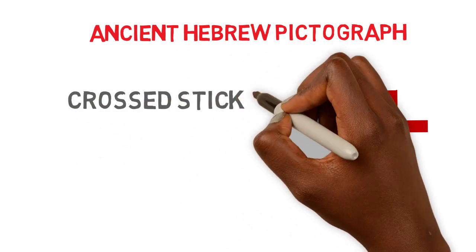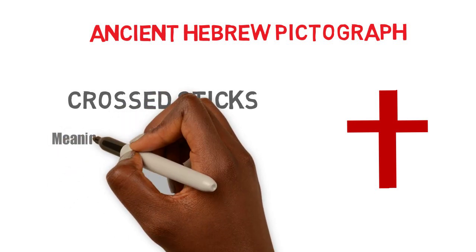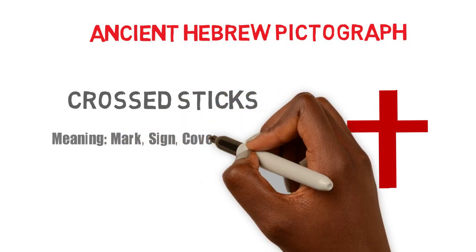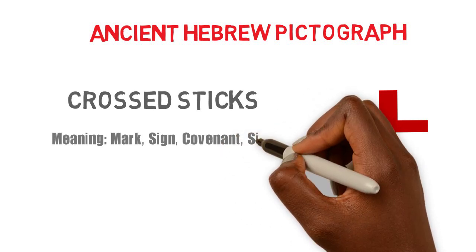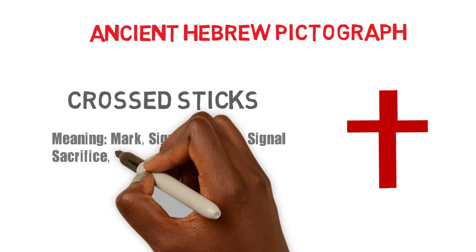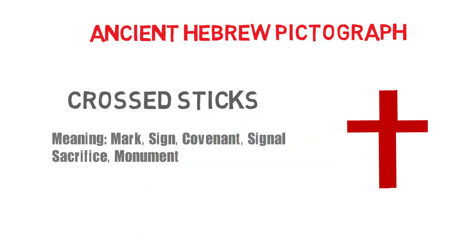Now as we have stated before, each Hebrew pictograph carries a meaning and a numeric value. Tau means mark, sign, covenant, signal, sacrifice, and monument. There are some additional meanings for Tau, but we will focus on these common meanings for this lesson.